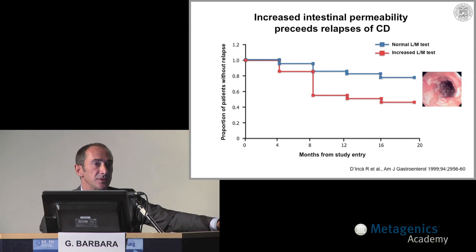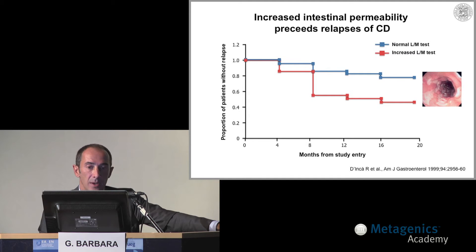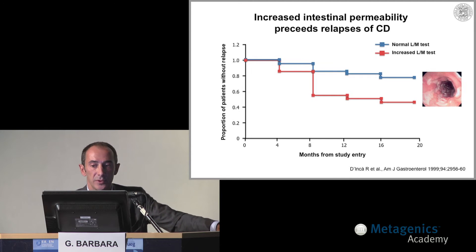The question is whether the leaky gut is a pathogenetic factor in certain diseases. A study published some years ago by the group of Professor Sturgnolo in Padua demonstrated that intestinal permeability in patients with Crohn's disease precedes the relapse of the disease, indicating that it can have an etiopathogenetic role in the recrudescence and reactivation of the inflammatory response in IBD.